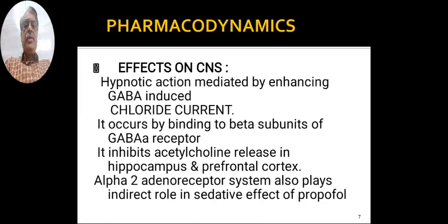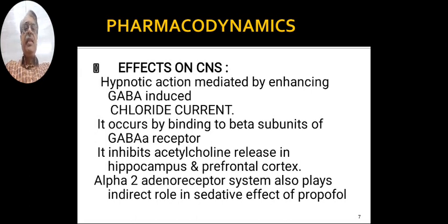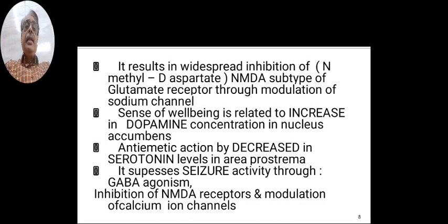Now we will see the pharmacodynamics. Effects on the central nervous system: the hypnotic action is mediated by enhancing GABA-induced chloride current. It occurs by binding to beta subunits of the GABA receptor. It inhibits acetylcholine release in the hippocampus and prefrontal cortex. The alpha-2 adrenoreceptor system also plays an indirect role in the sedative effect of propofol. It results in widespread inhibition of the NMDA subtype of glutamate receptor through modulation of sodium channels.